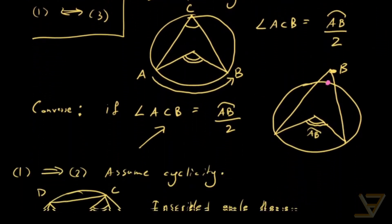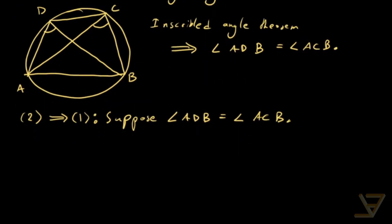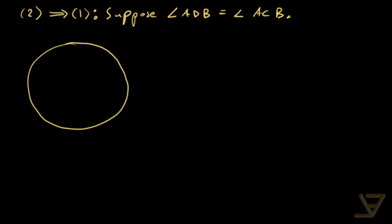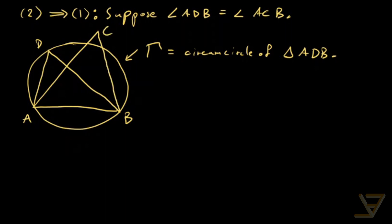Now let's go in the other direction, from two to one. Suppose angle ADB is equal to angle ACB. We'll draw a diagram as usual — it's always helpful. We're going to start with triangle ADB, and let gamma be the circumcircle of triangle ADB. We also draw C somewhere outside, and the goal is to prove that C lies on gamma, the circumcircle.